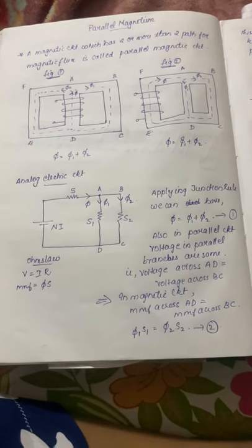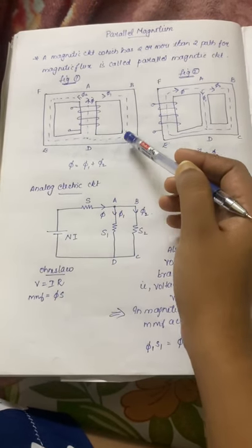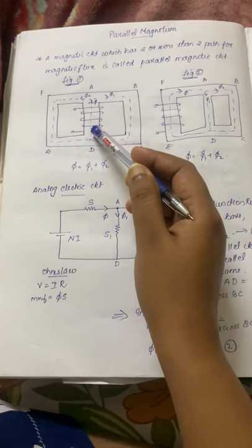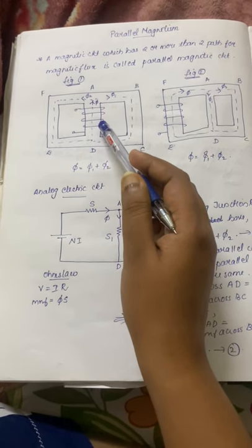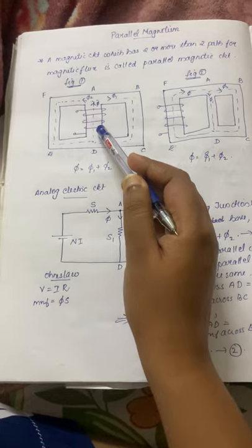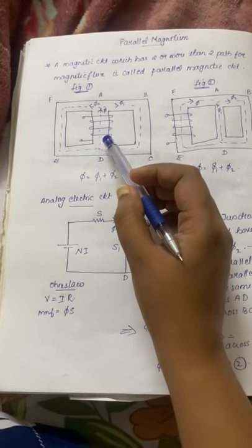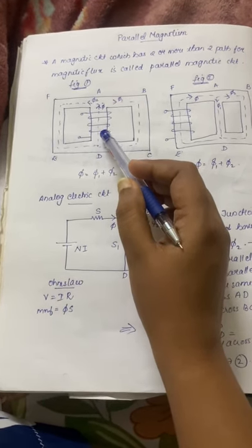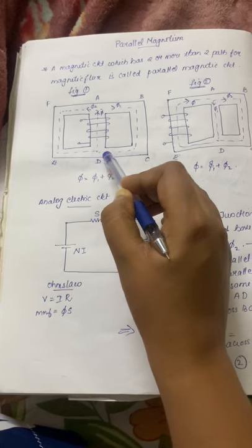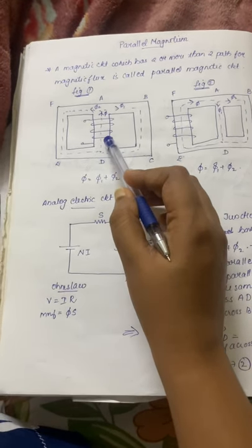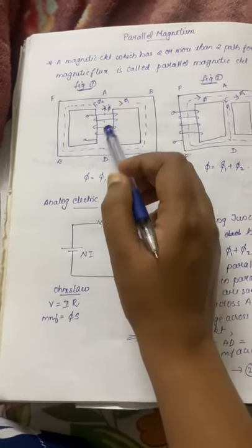In most problems we are dealing with electromagnets. For a material to behave as a magnet, we need to provide an external source or current. We have a coil, and through the coil we pass the current. Once the current passes through this coil, the entire material behaves as a magnet. So you need to find where the coil is — that's where the magnetizing effect enters the circuit.